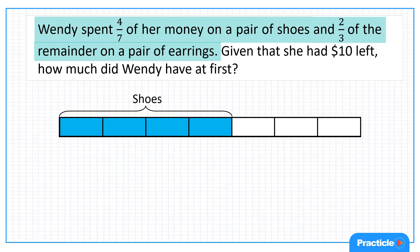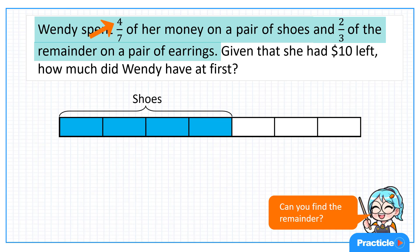Whenever we are solving a remainder concept question, it's important to know where the remainder is. Can you find which part of our model represents the remainder? Since Wendy spent four parts out of these seven parts, she's going to be left with these three parts. And these three parts represent the remainder.